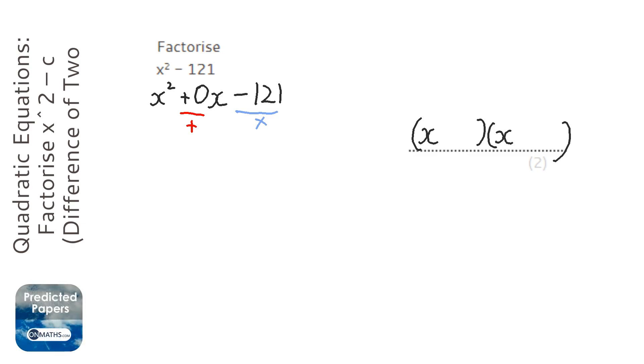Now 121 is not a number that's just been made up. It's always going to be a square number, otherwise this doesn't work. One of them will need to be positive and one negative.